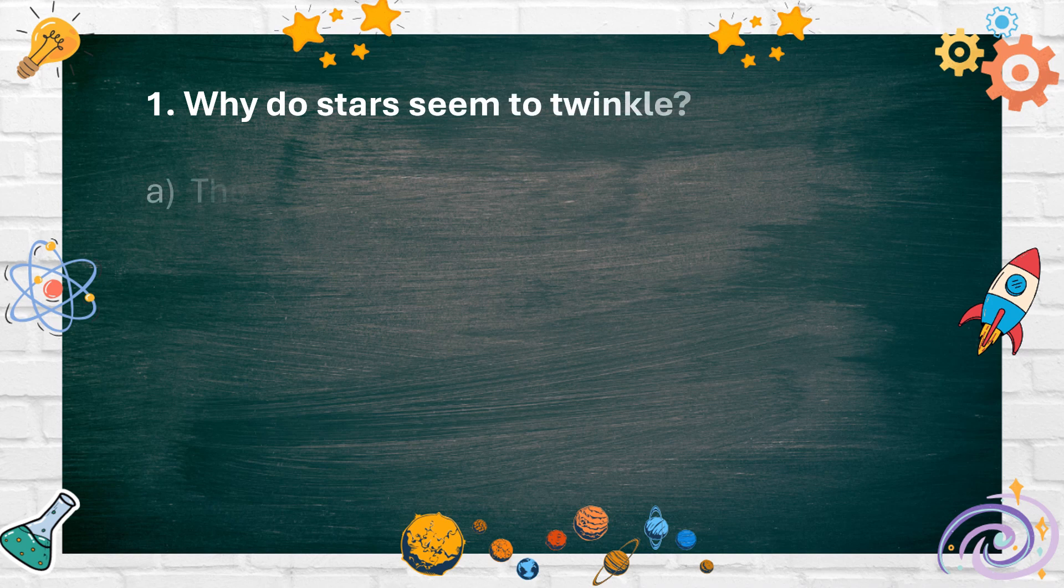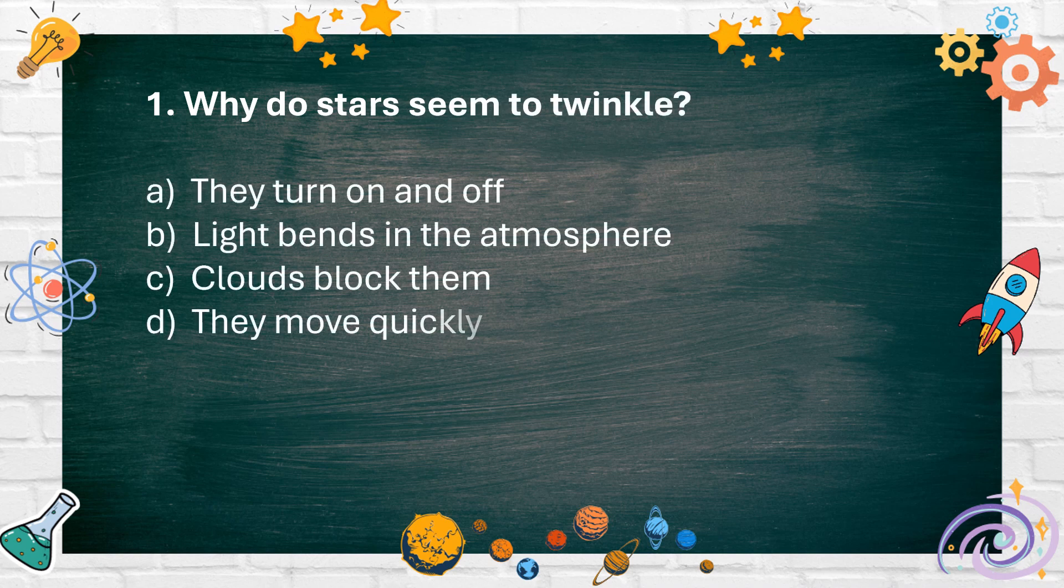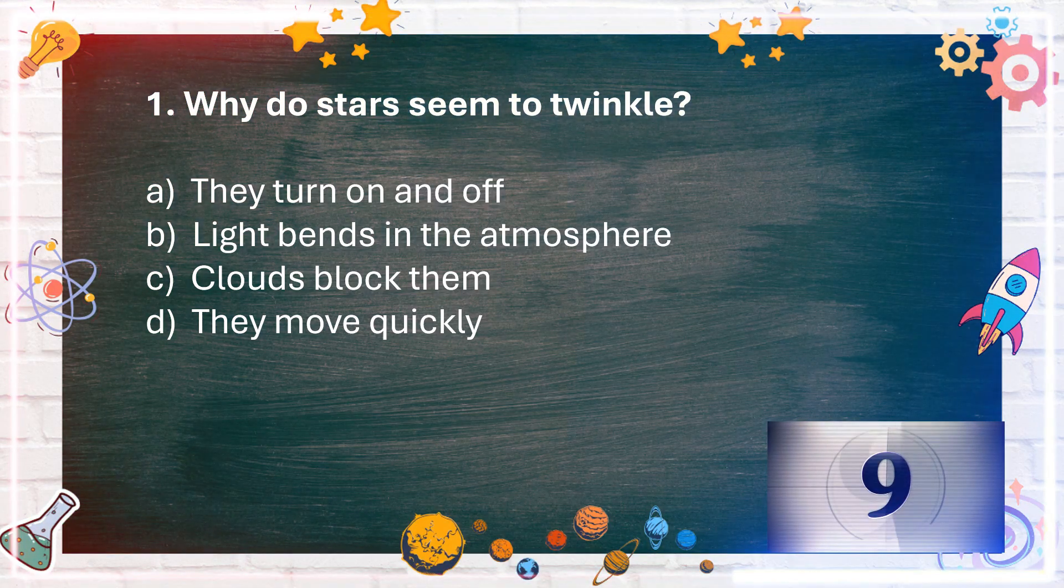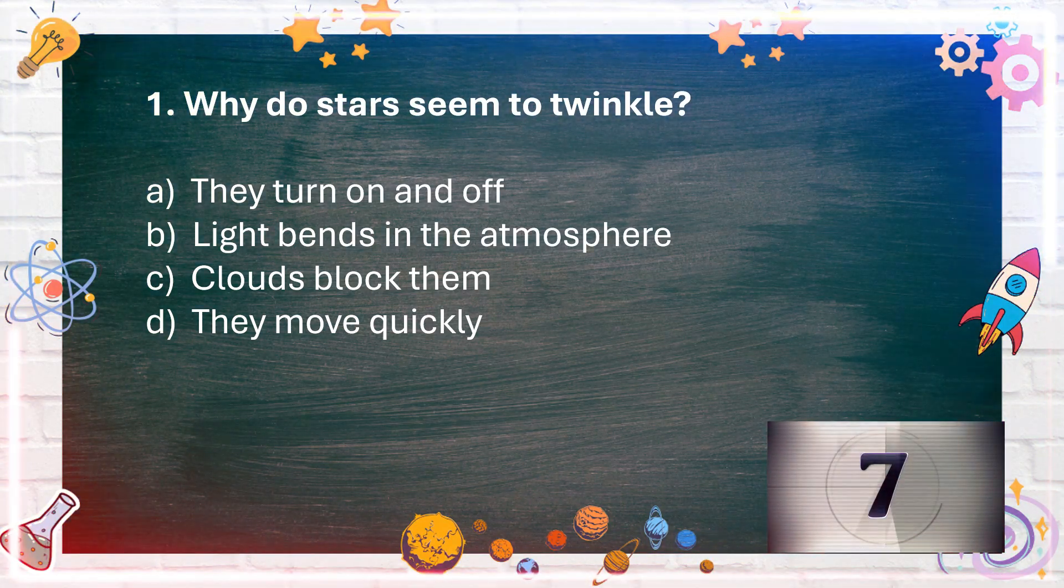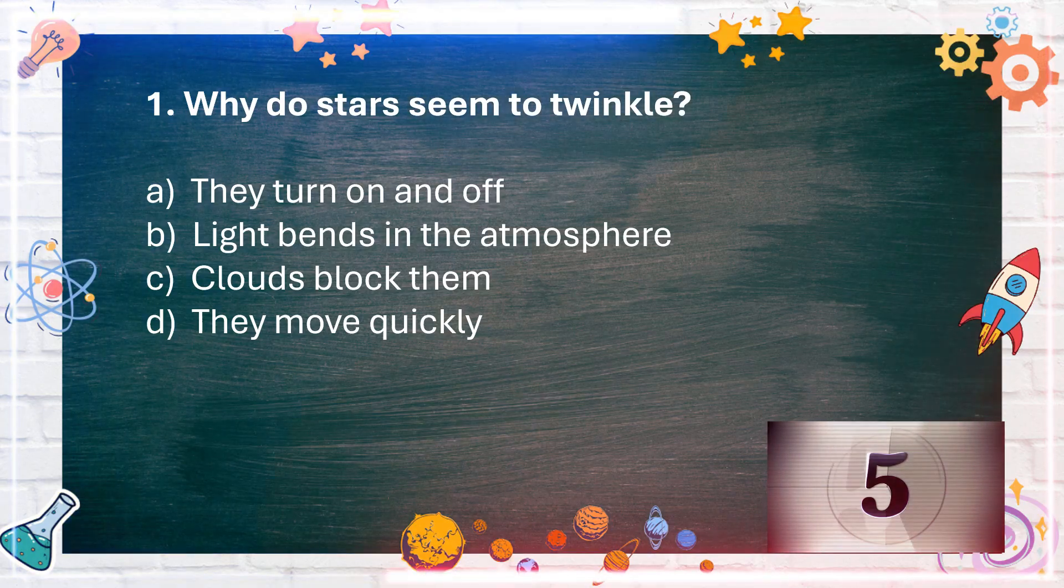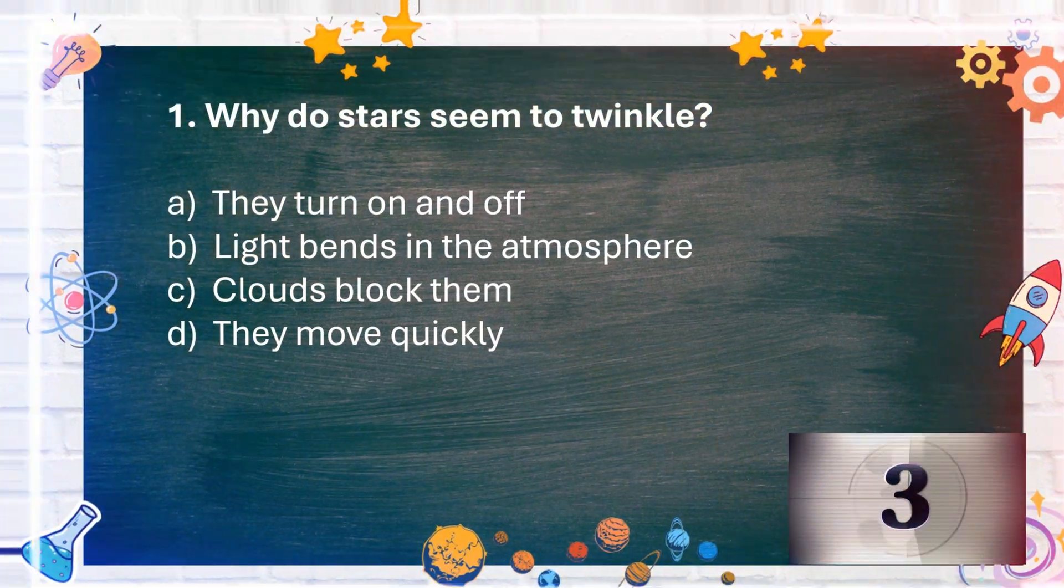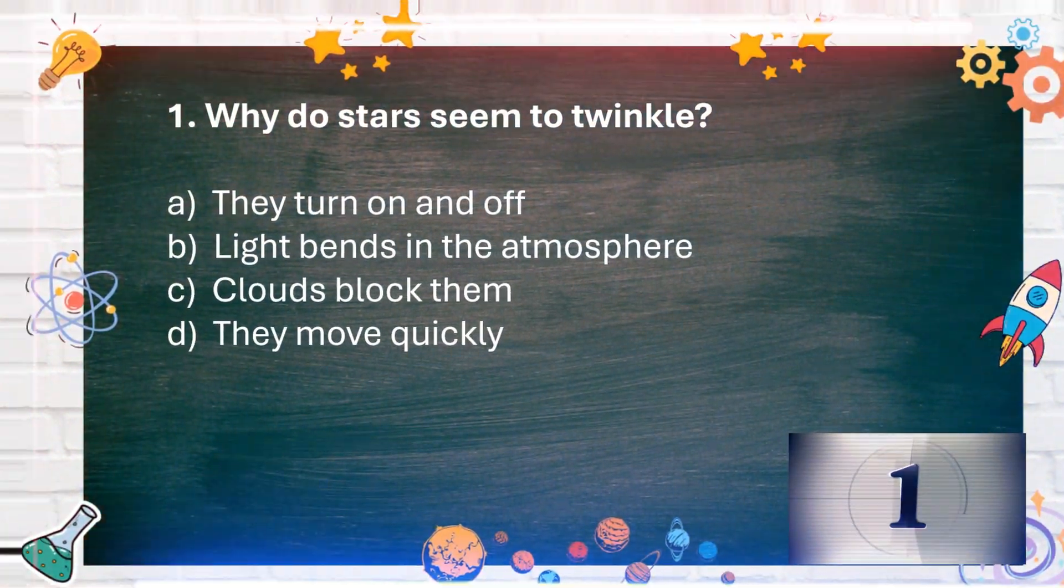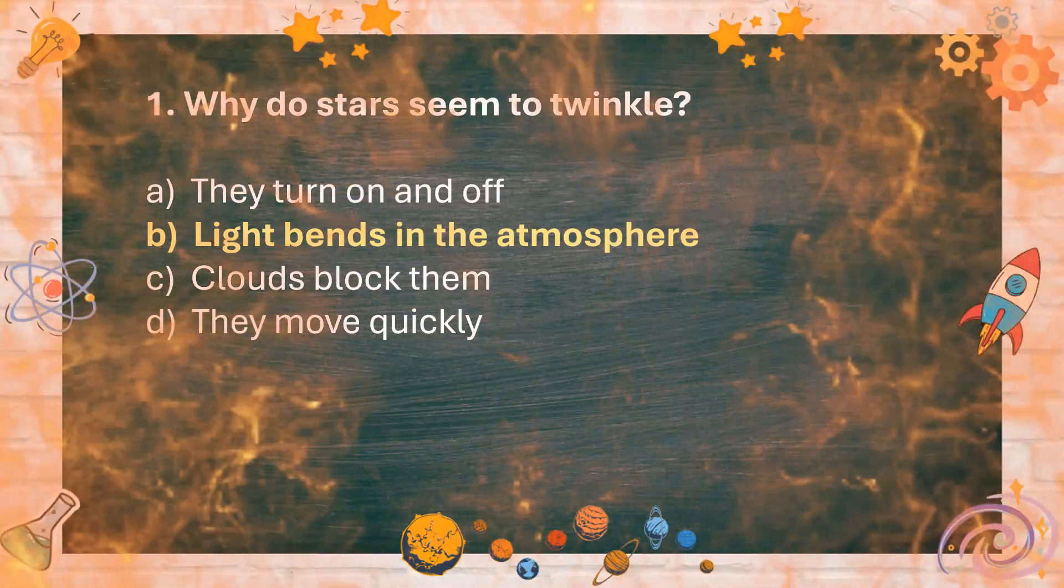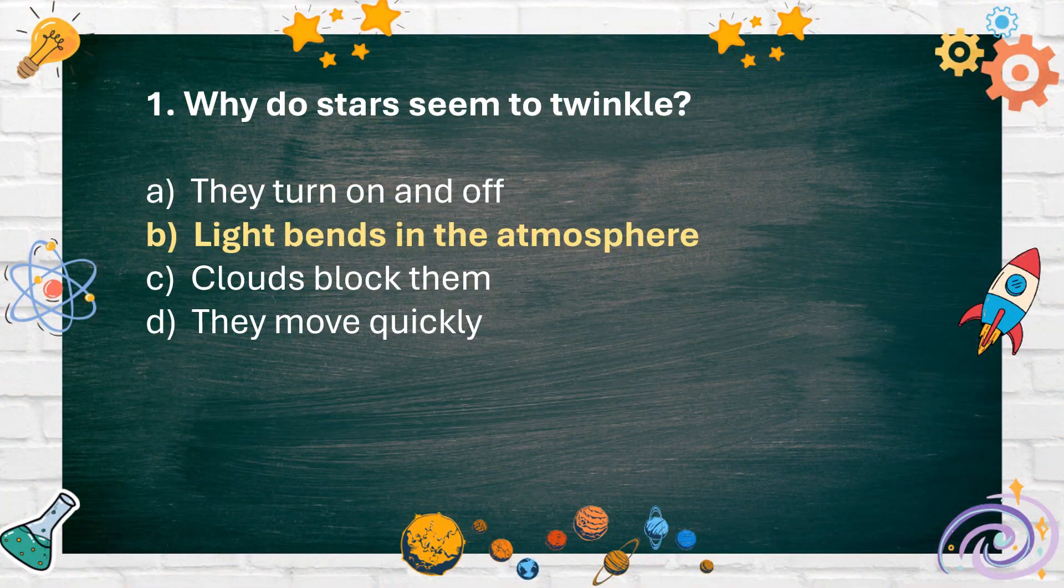Number 1: Why do stars seem to twinkle? A. They turn on and off. B. Light bends in the atmosphere. C. Clouds block them. D. They move quickly. The answer is B. Light bends in the atmosphere.